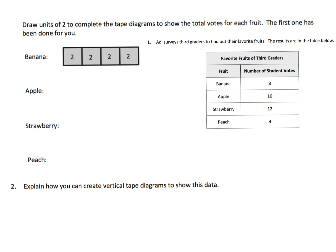I'm getting a little creative in terms of trying to fit everything onto one screen, but we're starting right here. It says Addy surveys third graders to find out their favorite fruits and their results are shown below. So we see that eight students liked bananas, 16 liked apples, 12 liked strawberries, and four liked peaches.